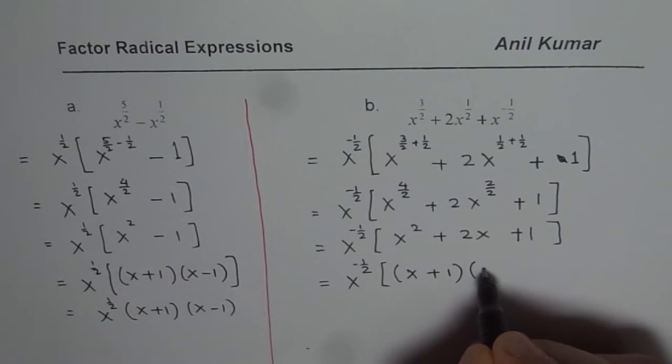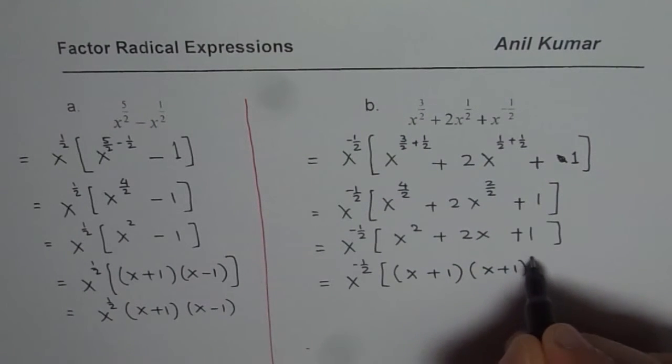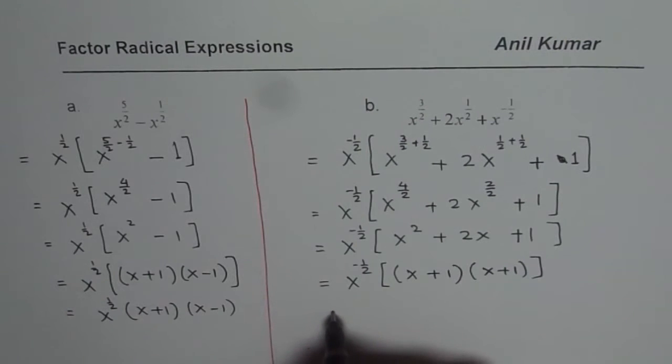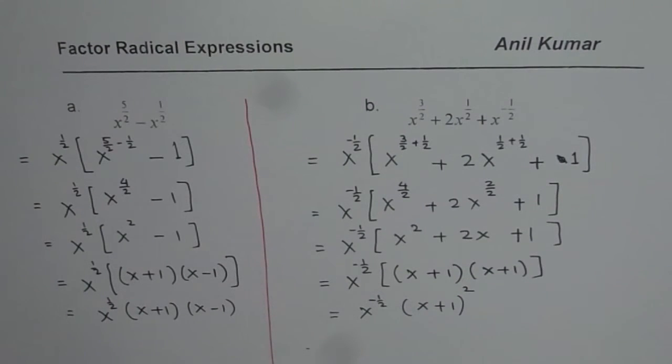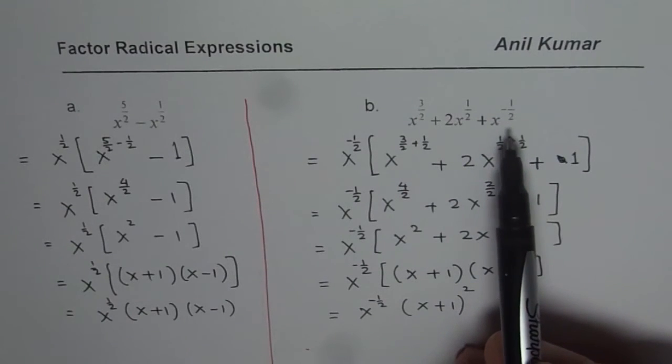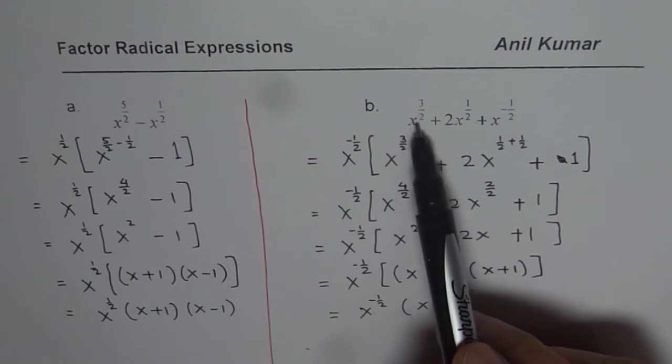So we can write this as x plus 1 times x plus 1, bracket close. And that becomes x to the power of minus half times x plus 1 whole square. So that is how you can actually factor the expressions with radicals. So radicals are when the powers are like 1 over 2. These are the radicals.